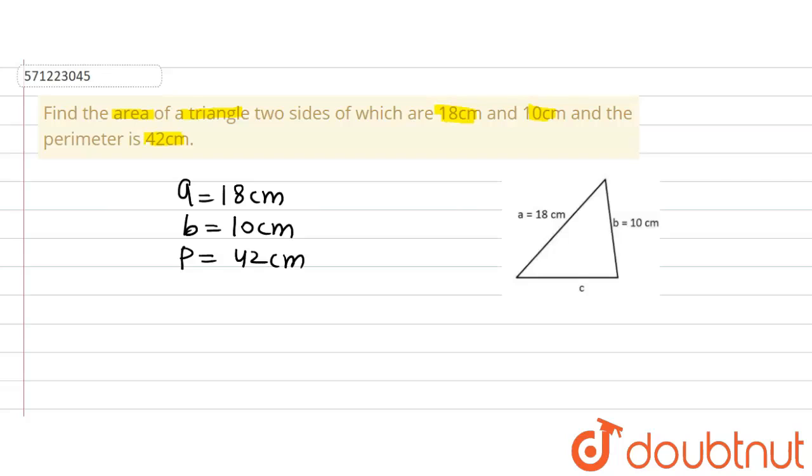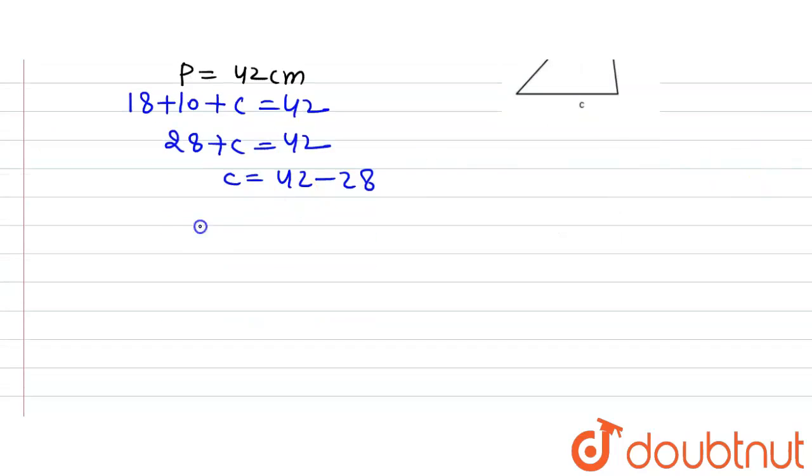Now let's find out the third side first of all. So the perimeter will be equal to a plus b plus c, that is 18 plus 10 plus c will be equal to 42 cm. On solving it we will get 28 plus c is equal to 42. This 28 when it will go to the right hand side of the equation gets converted into a minus.